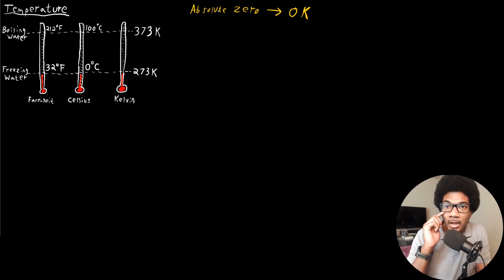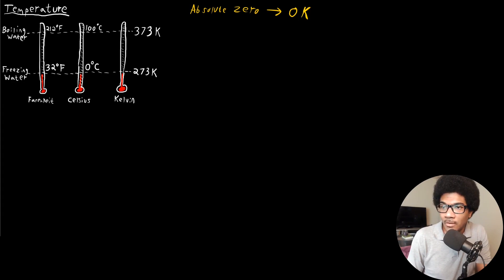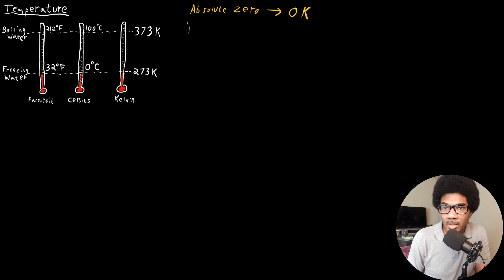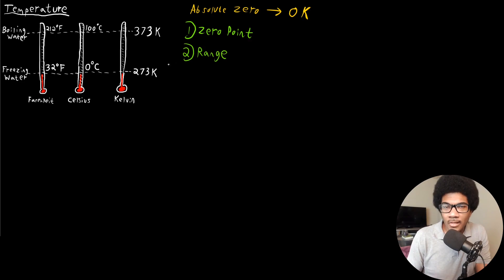So how do we convert between these different temperature scales? The two things you need to know are: one, the zero point — how do we account for a difference in zero point between the two scales? And second, the range of numbers — how fast or slow do they increase? Do they increase at the same rate? That's why on these three thermometers I've marked the freezing and boiling points of water.